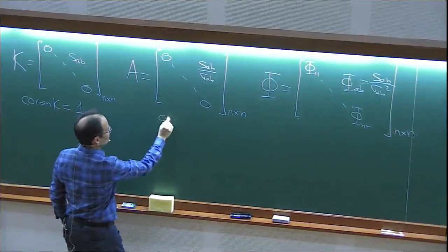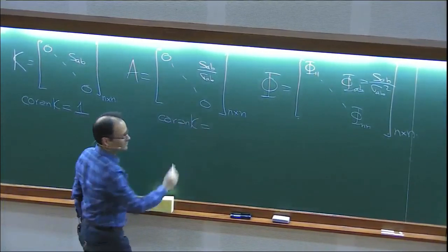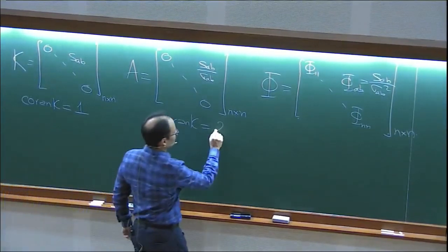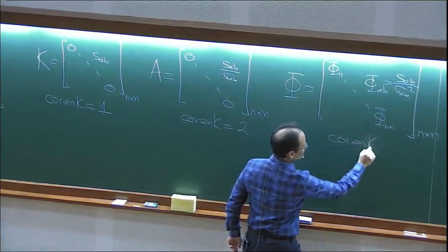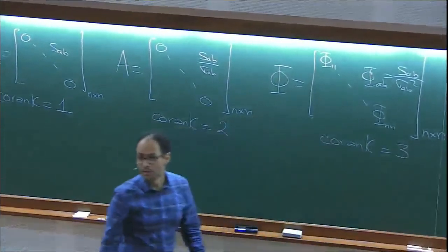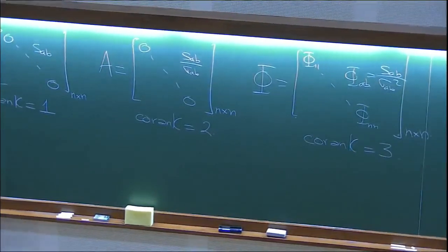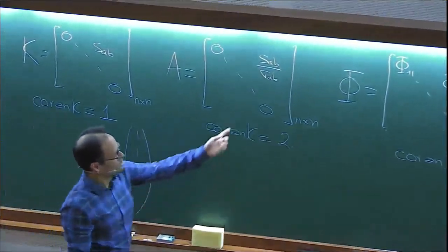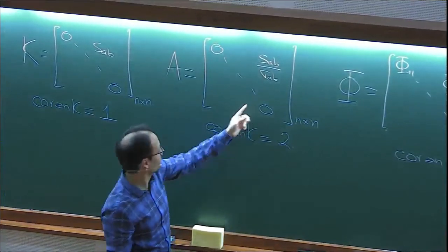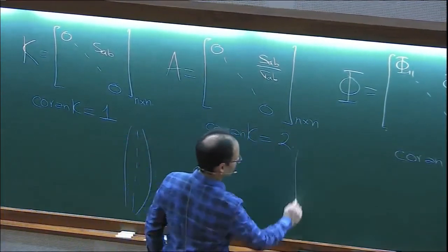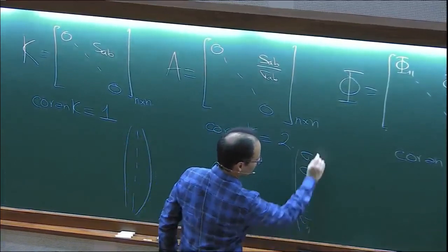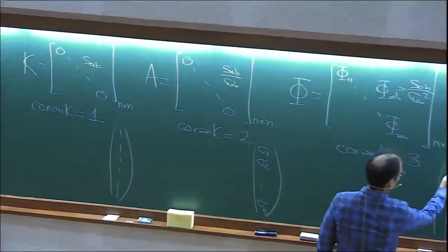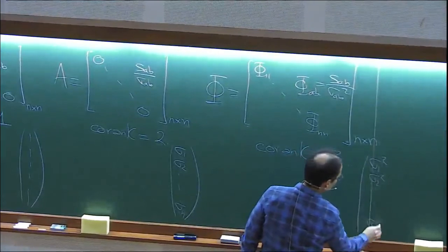How about the co-rank of this one? We said it yesterday — it was two. And the co-rank of this one — also said yesterday — happens to be three. The null vector of Phi is (1, 1, ..., 1). The two null vectors of A are (1, 1, ..., 1) and (sigma_1, sigma_2, ..., sigma_n). And Psi has the previous two plus an extra one: (sigma_1^2, sigma_2^2, ..., sigma_n^2).